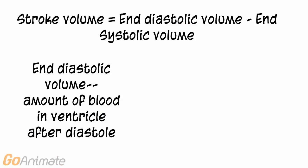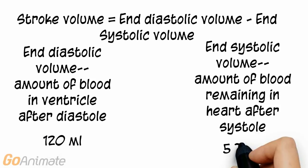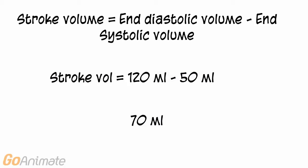The stroke volume is equal to the end diastolic volume minus the end systolic volume. The end diastolic volume is the amount of blood in the ventricle after diastole — that is, the amount of blood in the ventricle after it fills while it is relaxed. The end systolic volume is the amount of blood remaining in the ventricle after systole, which is the amount remaining after it contracts. The end diastolic volume is about 120 milliliters and the end systolic volume is about 50 milliliters. If we subtract the two numbers, we get our stroke volume of 70 milliliters.